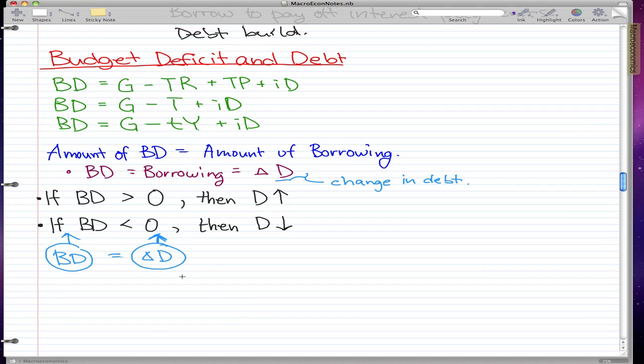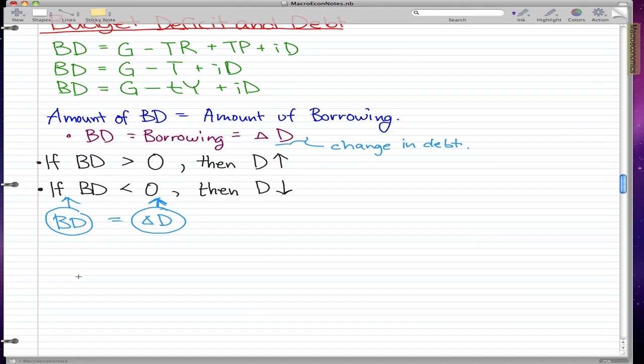There is actually a hidden fact about this circle and up arrow, and I'm going to go through that now. If BD is positive—and when it's positive, I mean that BD is greater than zero—and it rises from 20 to 30, then we